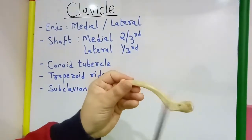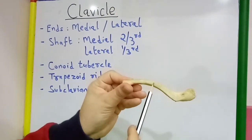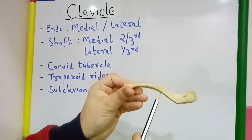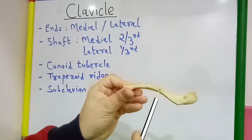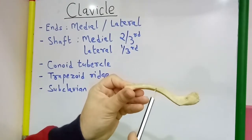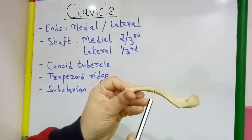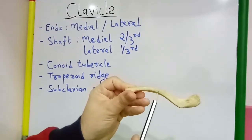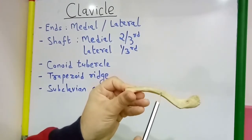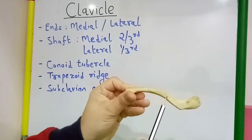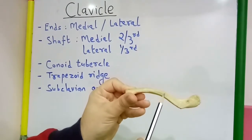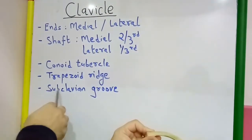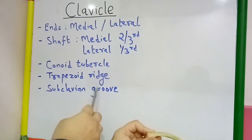Also seen in the middle one-third of the inferior surface of the shaft, there is a longitudinal groove known as the subclavian groove.